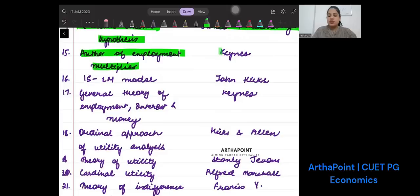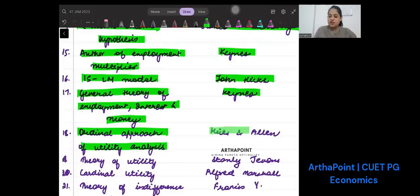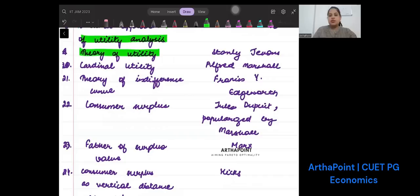Author of employment multiplier was Keynes. ISLM model was given by John Hicks. General Theory of Employment, Interest, and Money was given by Keynes. Ordinal approach of utility analysis was given by Hicks and Allen.